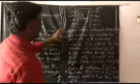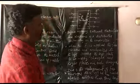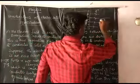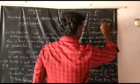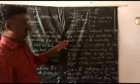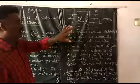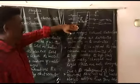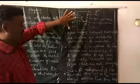Before applying the electric field, free electrons are distributed uniformly in the conductor and move in random directions. When the electric field is applied, the free electrons are no longer in purely random motion.